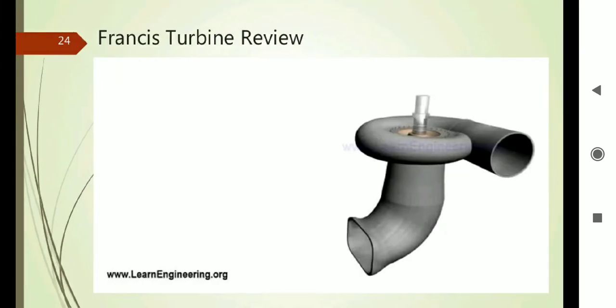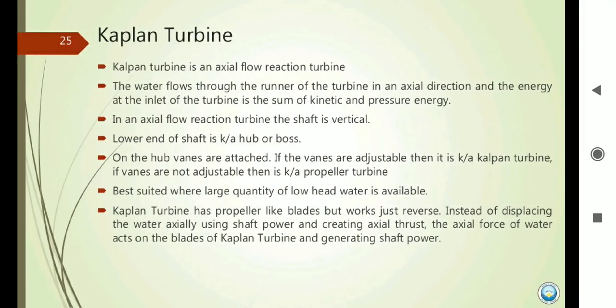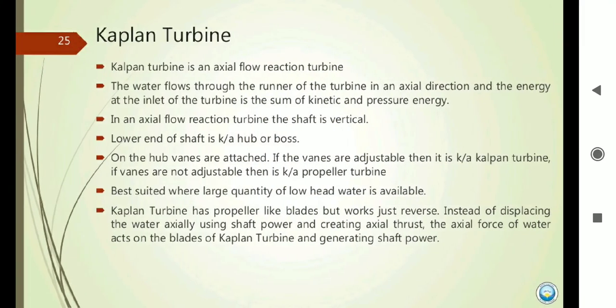To summarize the Francis Turbine: water enters in the radial direction and exits in the axial direction, with the draft tube at the end. Now let's see another type of turbine — the Kaplan Turbine.